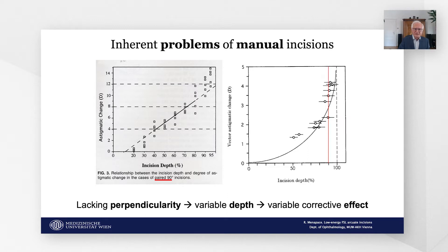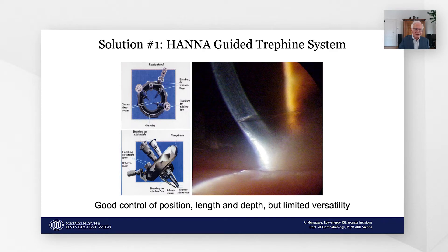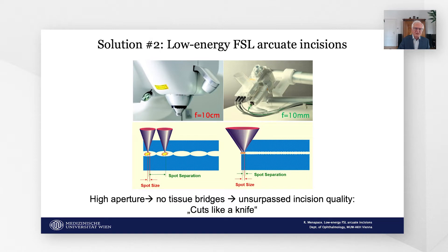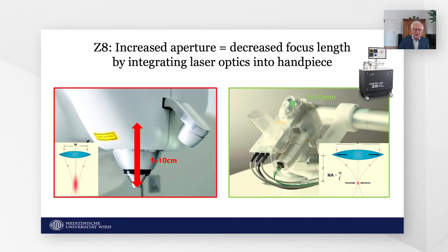Unavoidable tilt and inclination of the blade result in variable depth and thus variable corrective effect of the incision. One solution is a guided manual system which provides good control of position, length, and depth. Femtosecond lasers with a high aperture generate a dense grid of low-energy spots resulting in a smooth, continuous tissue cut without residual tissue bridges. The Z8 provides such high aperture by integrating the laser optics into the laser handpiece.